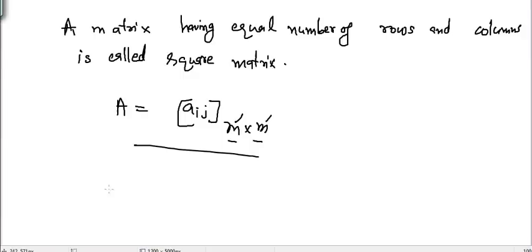We can take an example now. If matrix A is equal to 2, 3, 1, 4, then it is a square matrix because its order is 2 cross 2. It has two rows and two columns.